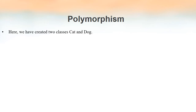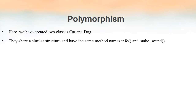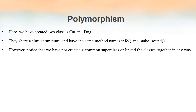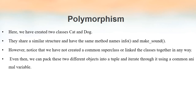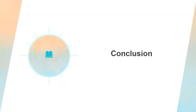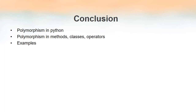In this example, the two classes Cat and Dog share a similar structure — they have the same number of methods and the same method names: info and makeSound. We have not created a common superclass or any kind of relationship between these two classes. Even so, we can pack these two different objects into a tuple and iterate over them — and this is possible due to polymorphism. In this video lecture we discussed polymorphism in Python and how it is implemented using operators, functions, and classes. Thank you so much.